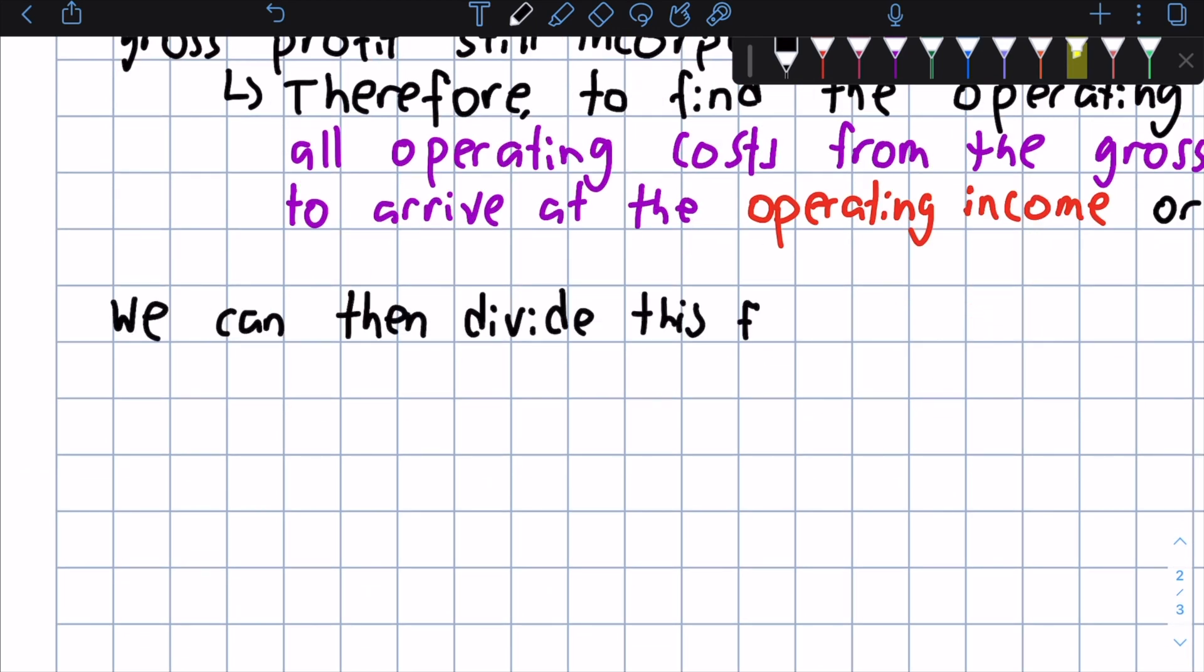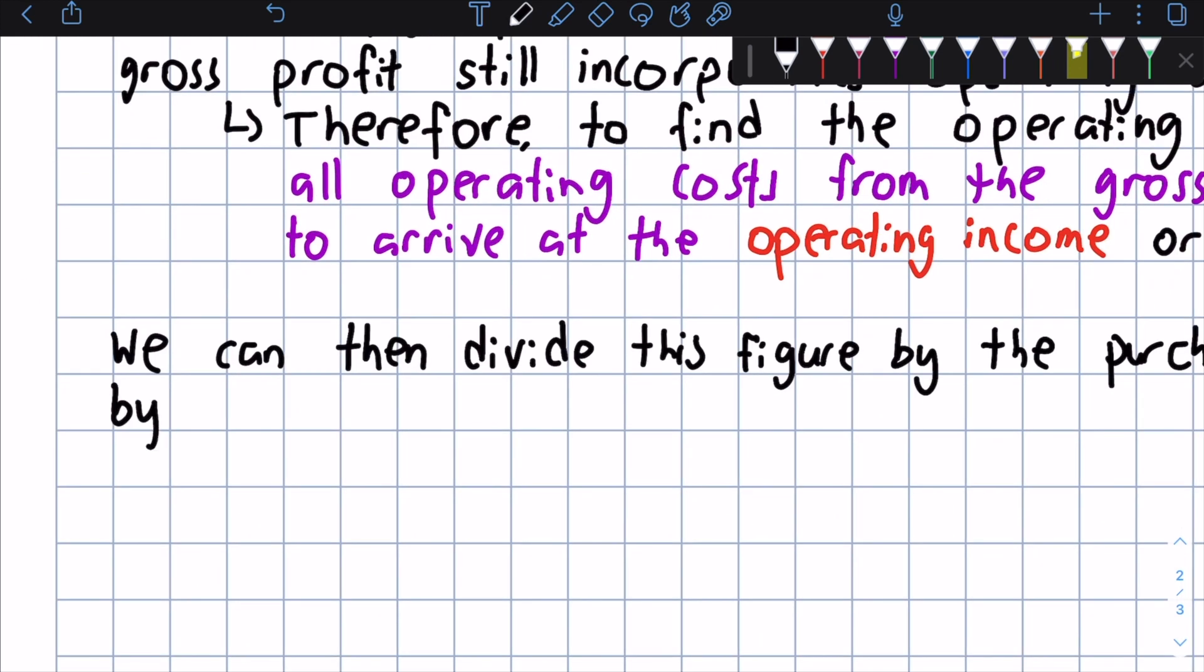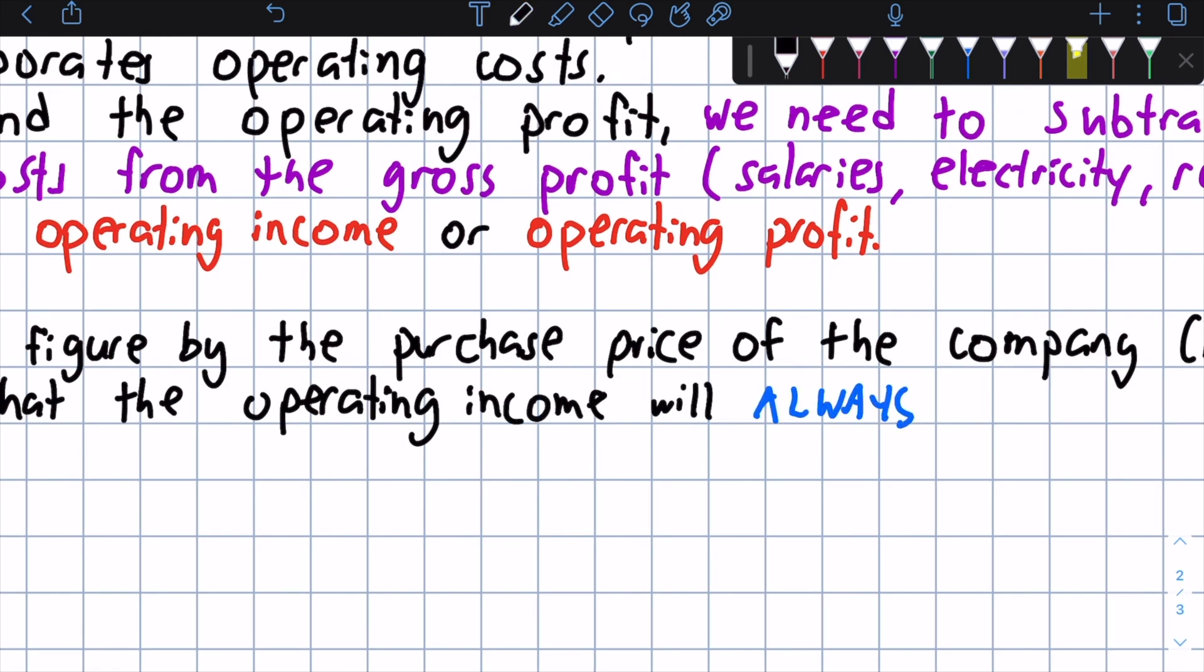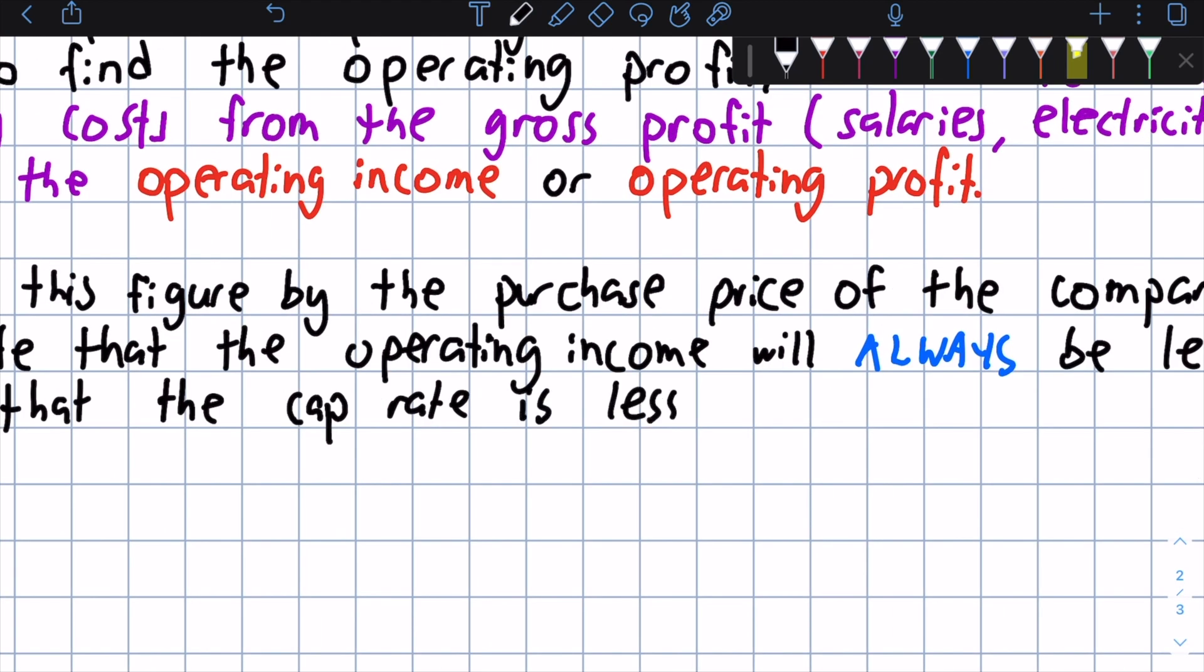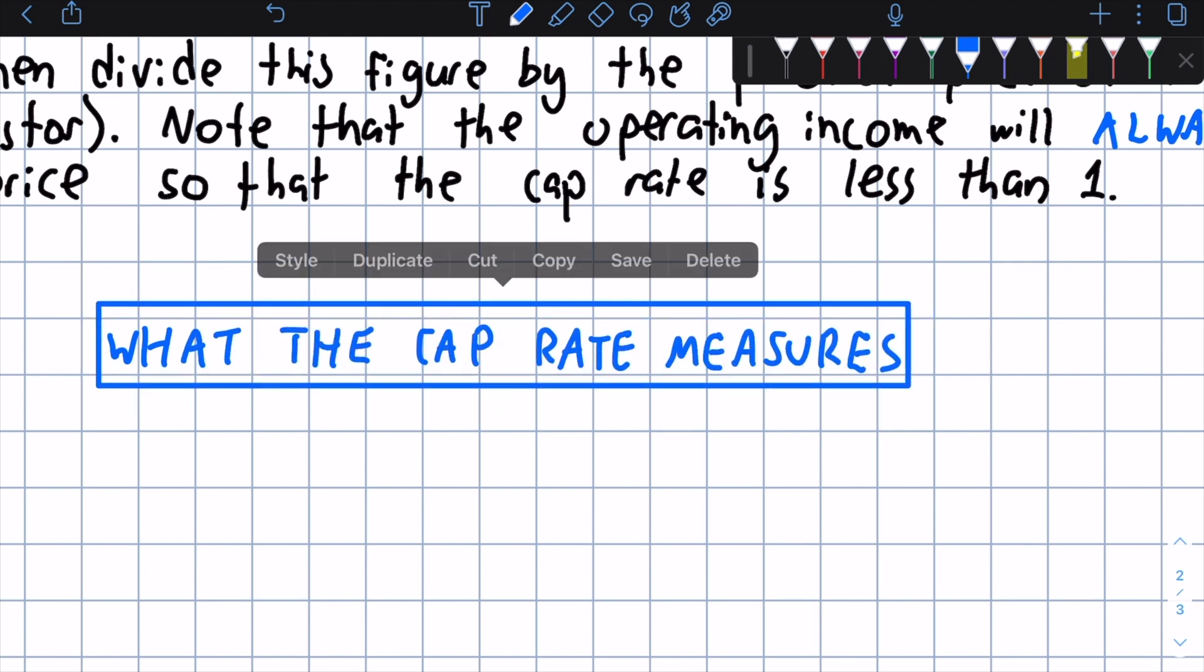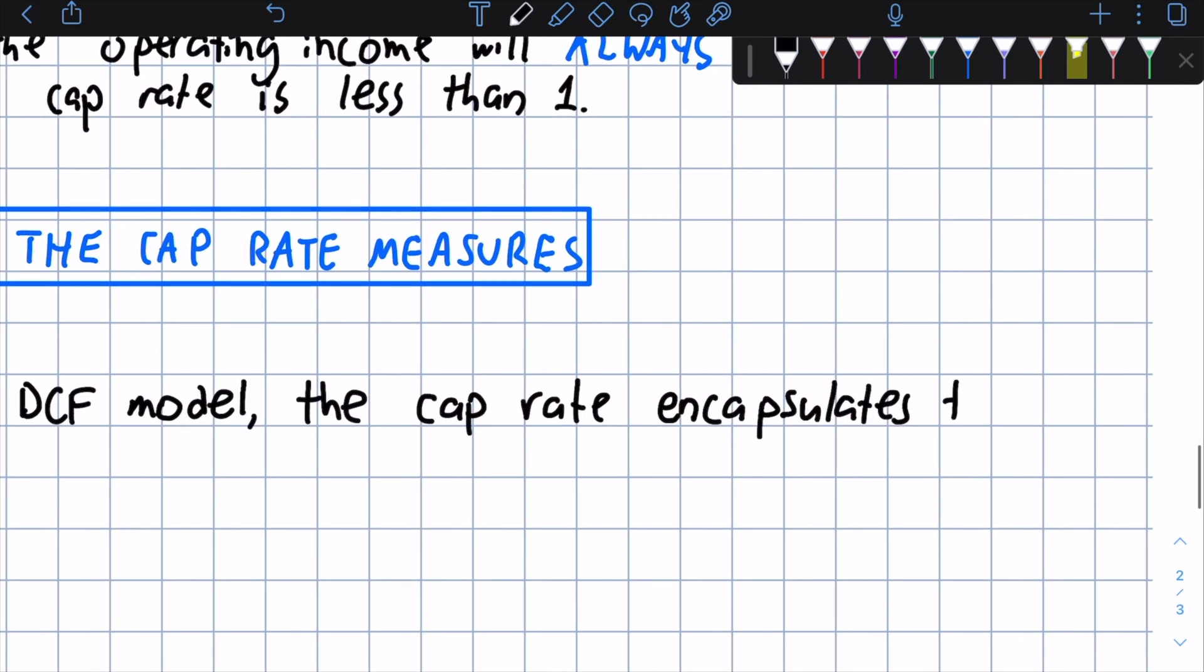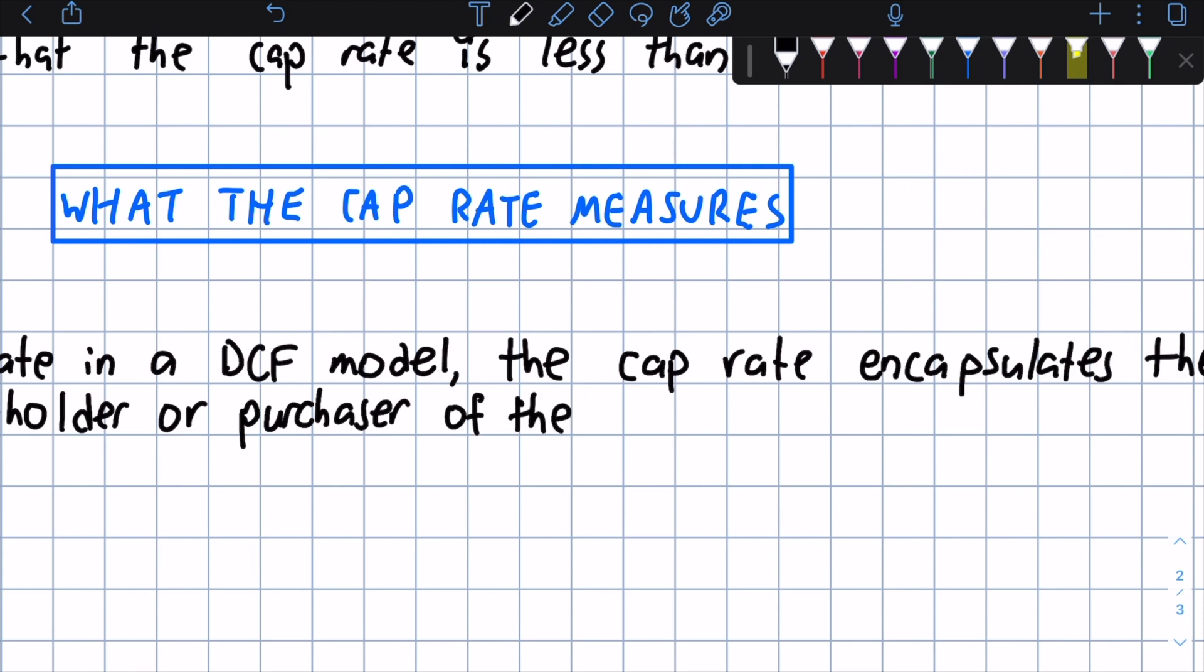We can then divide that by the purchase price of the company. And again, this is if it's bought by an investor or by another company. And we can note that the operating income will always be less than the purchase price so that the cap rate is less than one. And this makes sense in theory. Now, it's important to understand what exactly that cap rate measures when we're looking at valuing a company. So much like the discount rate in a DCF model, the cap rate encapsulates the risk tolerance of a shareholder or purchaser of the business.